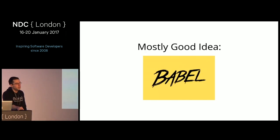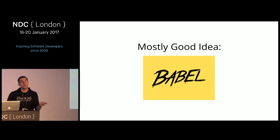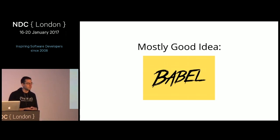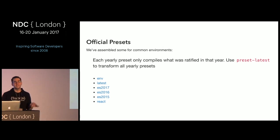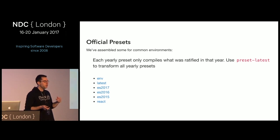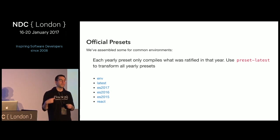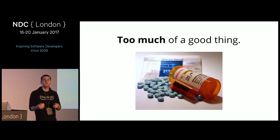Everyone in this room thinking about transpilers is probably thinking about Babel. It was originally written by an 18-year-old from Australia called 'six-to-five,' now called Babel, with hundreds or thousands of contributors. When you choose Babel, you have to pick a preset: React, ES2015, ES2016, ES2017, or 'latest' — each one adds more and more features. The problem is a lot of these features are polyfilled or transpiler magic, and that can result in performance issues. Transpilation can be too much of a good thing.